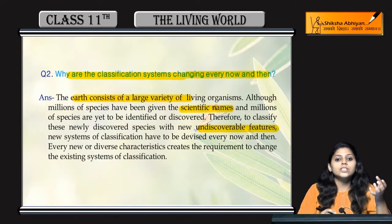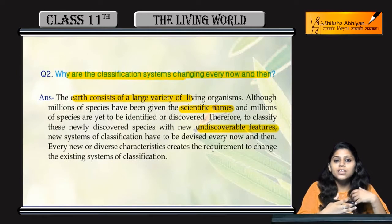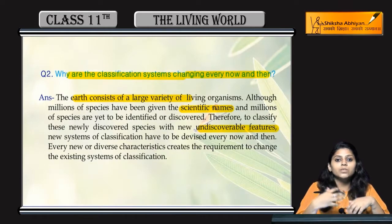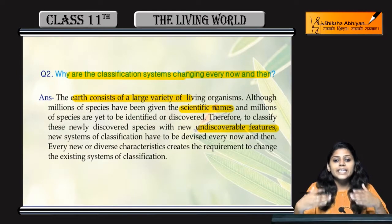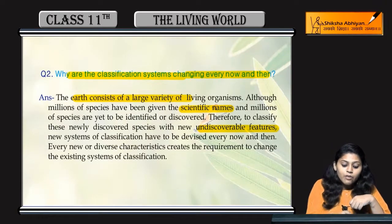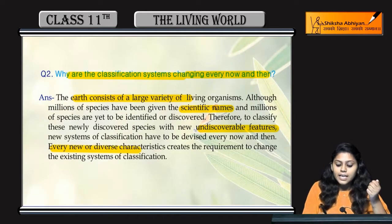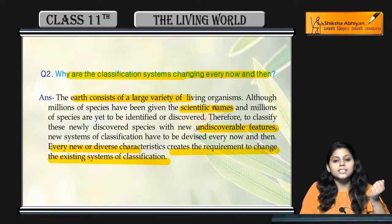For example, there can be some organisms that are not similar to plants or animals, and not similar to Monera or Protista either. That is why a new classification system is needed, so that those features can also find a place. Every new or diverse characteristic creates the requirement to change the existing system of classification.